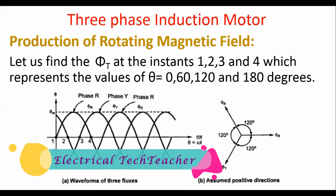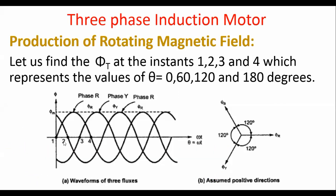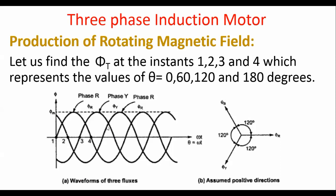We will explain the total flux at four different instants. Instant 1 represents θ = 0°, instant 2 represents θ = 60°, instant 3 represents θ = 120°, and instant 4 represents θ = 180°. We will find the total flux in each of these four cases.